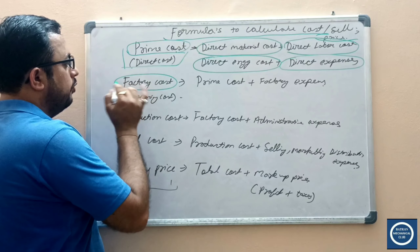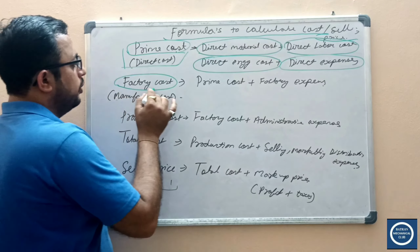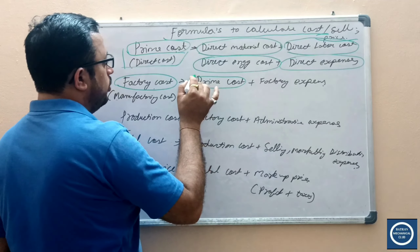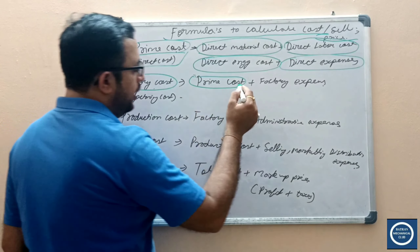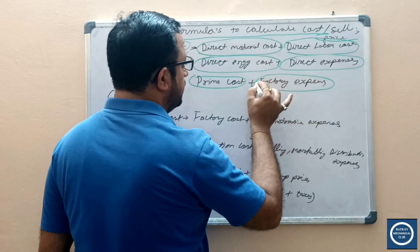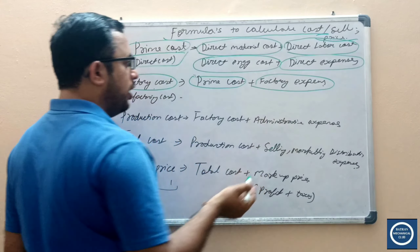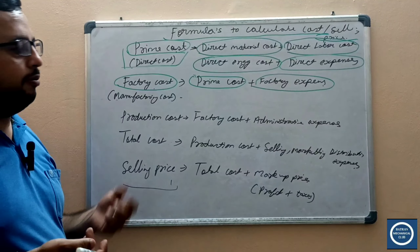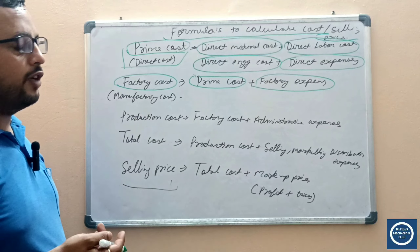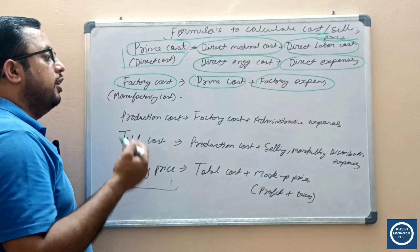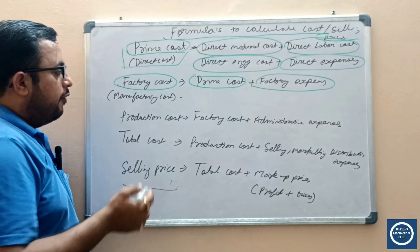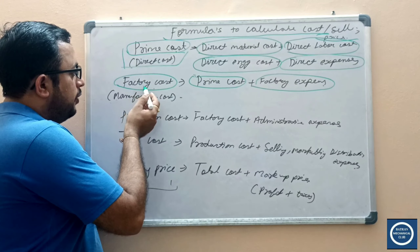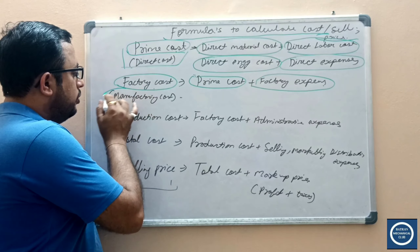Second, we will calculate the factory cost. Factory cost is the sum of your prime cost, calculated in the previous step, plus factory expenses. I have already made a video regarding factory expenses — you can go and check there for how to calculate your factory expenses.